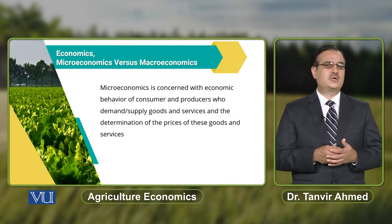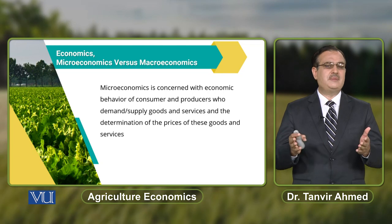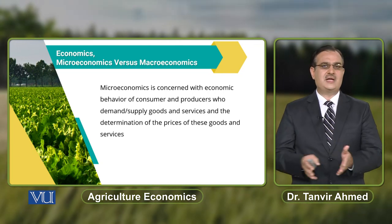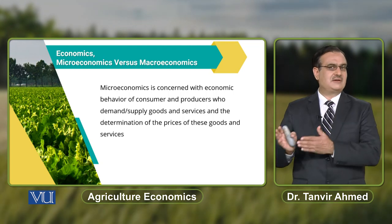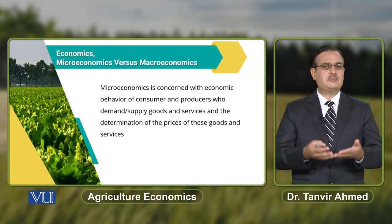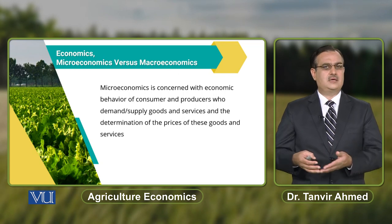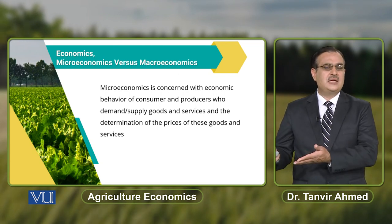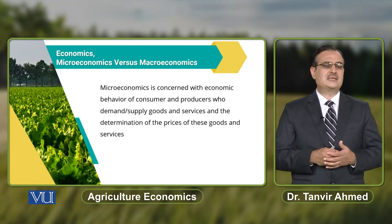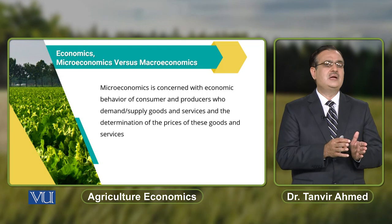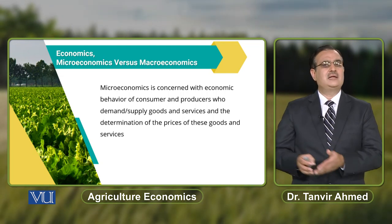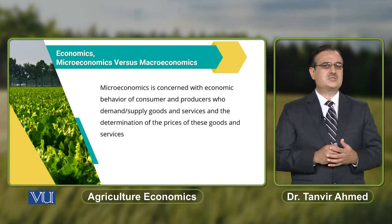For the maximization of profit, there are two sides: one is the output side and the other one is the input side. The producer has to produce the maximum level of output by using the given amount of resources. In other words, when we talk about efficient production, the producer will try to achieve the given level of output by using a minimum amount of resources.